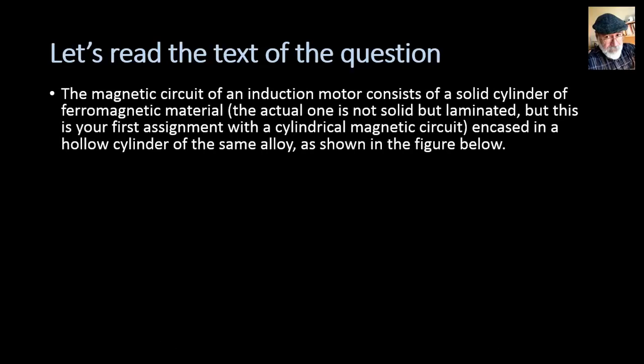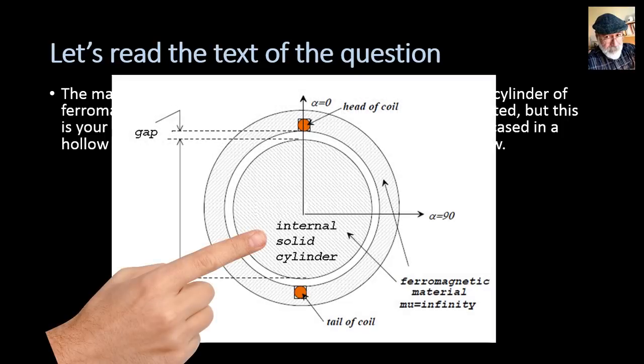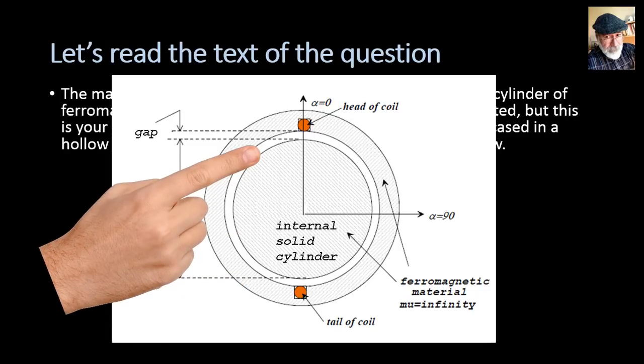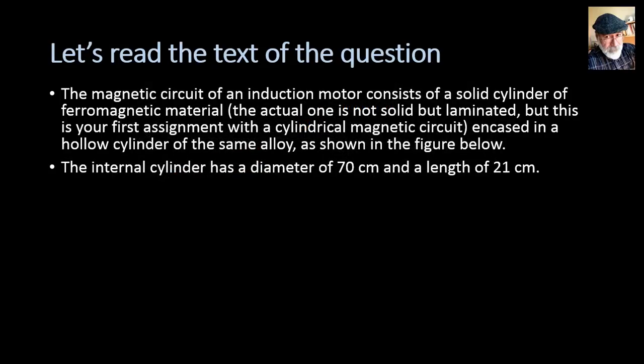Let's read the problem. The magnetic circuit of an induction motor consists of a solid cylinder of ferromagnetic material. The actual one is not solid but laminated, but this is our first assignment with a cylindrical magnetic circuit, so it's been simplified. That cylinder is encased in the middle of a hollow cylinder of the same alloy as shown in this figure. The internal cylinder has a diameter of 70 cm and a length into the page of 21 cm.